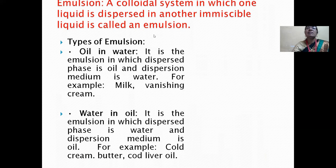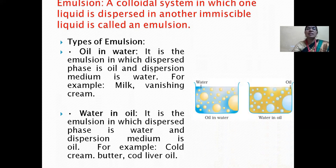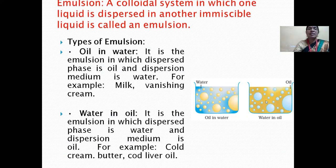Emulsion is a colloidal system in which one liquid is dispersed in another immiscible liquid — that is called an emulsion. Types of emulsion: oil in water, and water in oil. In oil-in-water emulsion, the dispersed phase is oil and the dispersion medium is water. In water-in-oil emulsion, the dispersed phase is water and the dispersion medium is oil. Examples of water-in-oil include cold cream, butter, and cod liver oil.